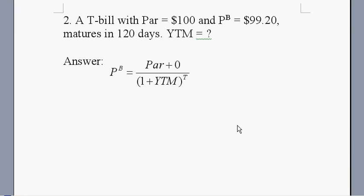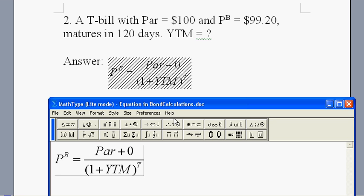In this question, we have a T-bill with a par value of $100, and its price is $99.20. It will mature in 120 days. And the question asks you what is the yield to maturity. This one is even a little bit more complicated than the previous example. So, let's look at how to calculate this one.